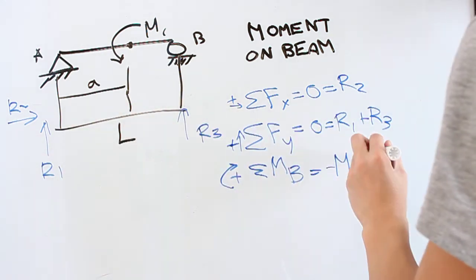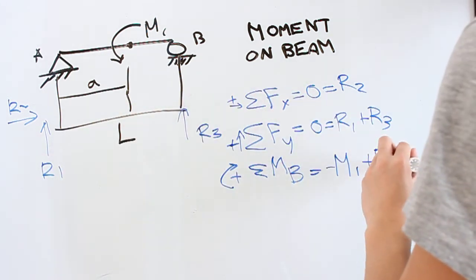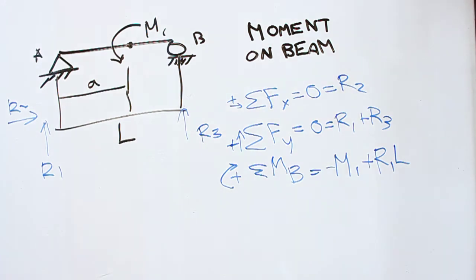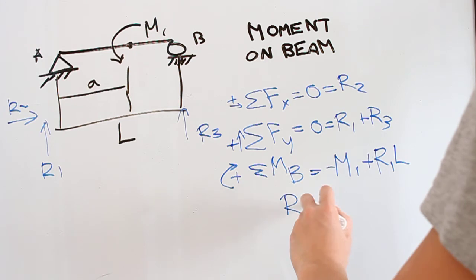We care now about R1, which is the same value as it was before, R1L. And so we can write this in terms of R1 because we want to find that out. R1 is M1 over L.